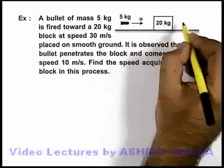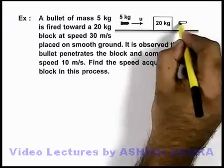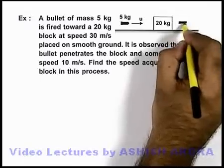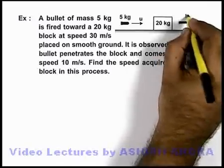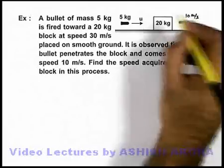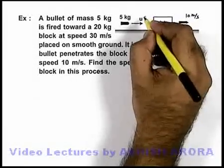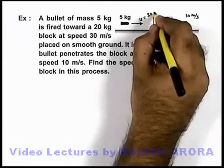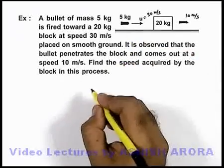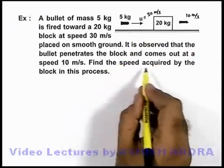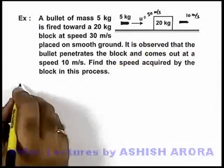That means when the bullet penetrates and comes out of the block, the speed of the bullet is reduced to 10 m/s, however the initial speed was u = 30 m/s as given in the problem. We are required to find the speed acquired by the block in this process.